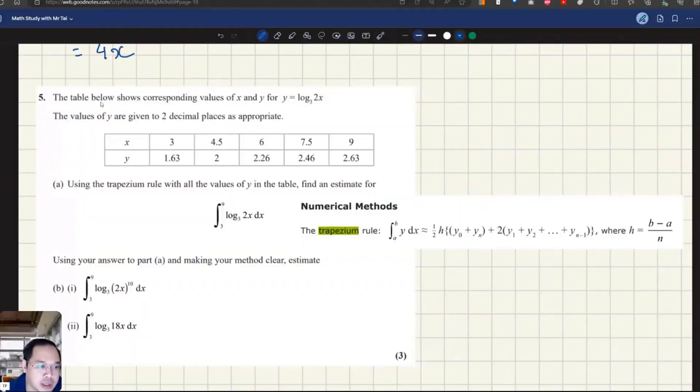The problem is given like this: we have a function y equals logarithmic base 3 of 2x. The values of y are given in two decimal places in the table below. So we have these values of x: 3, 4.5, 6, 7.9, and so on, and the corresponding value of y given in the second row.